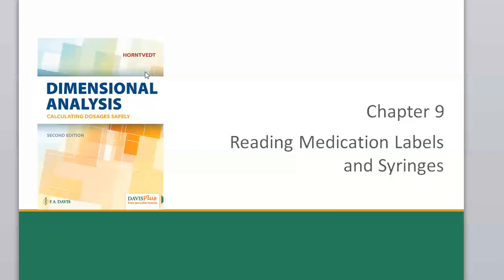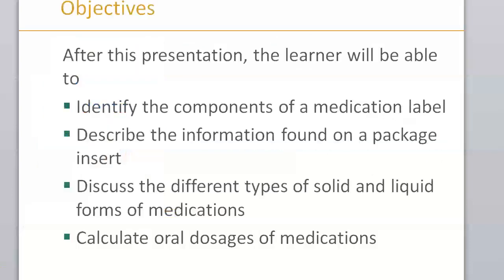The main information from this chapter is really about injectable medications — learning about the parts of the syringe, the different types of syringes, and making sure you understand calibrations and the different sizes of needles. The chapter objectives include looking at the medication label, describing information found on a package insert, discussing different types of solid and liquid forms of medication. We're not going to calculate oral doses since you've done all that in Nursing 123.